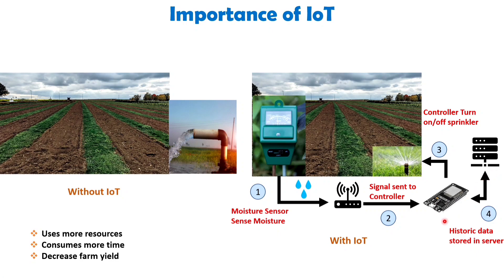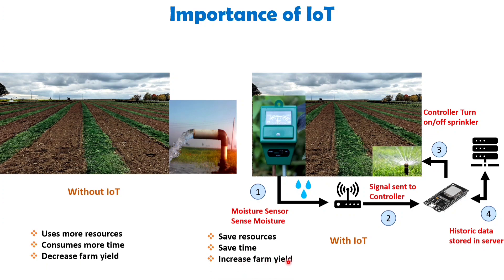By implementing IoT in agriculture, resources are conserved, time is saved, farm yield is increased, and overall costs are reduced. This example highlights just one instance of IoT's potential impact. Imagine the various ways deploying an IoT system can be incredibly helpful and beneficial to the user.